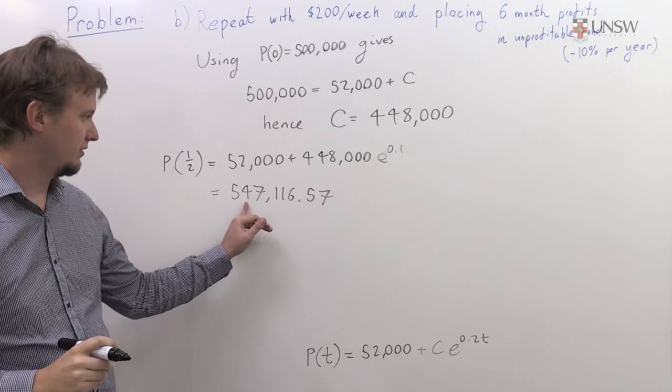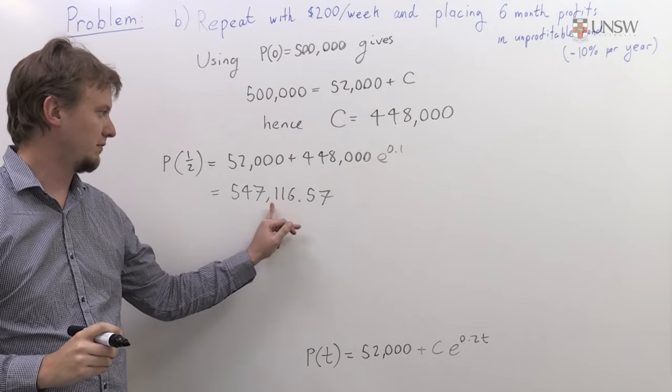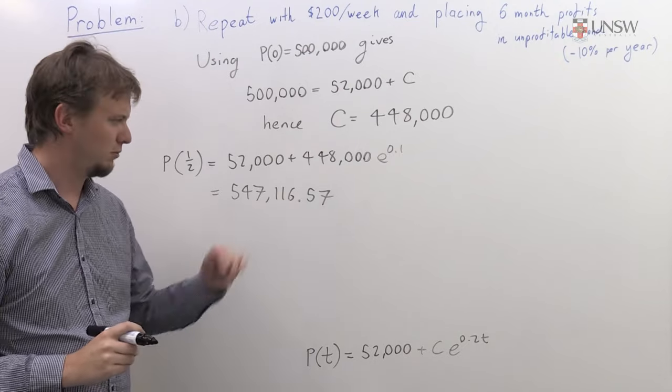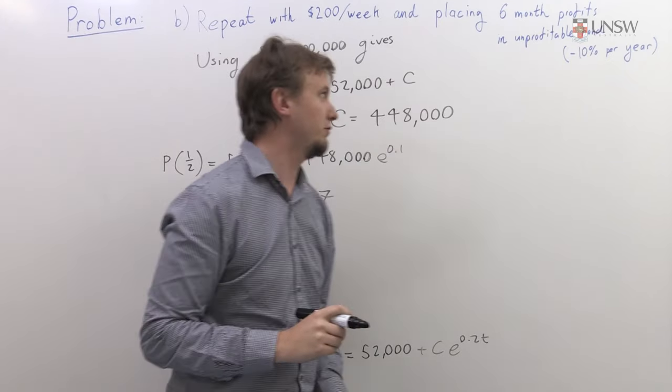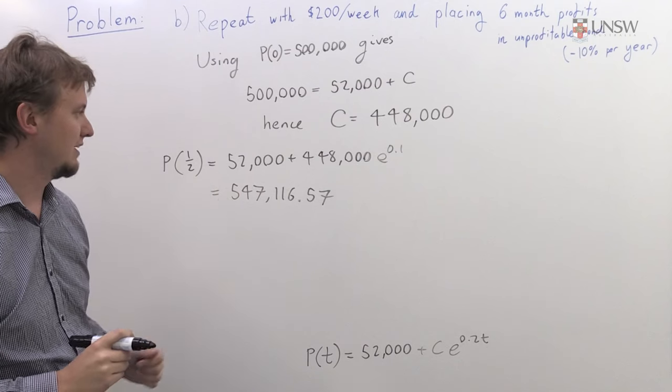Our profit here is actually just going to be this 47,116.57, and we're going to take that and put it into this unprofitable loan, which loses money at 10% per year.